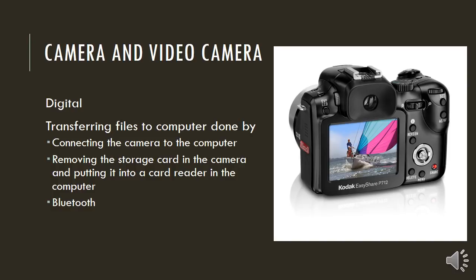A camera and video camera is also an input device because a picture goes into the camera and then from the camera into the computer. These cameras are digital, so they record the data digitally. They transfer files to the computer either via a wire connecting the camera to the computer, or you can remove the storage card and put it into a card reader. The latest modern cameras can also transfer via Bluetooth.